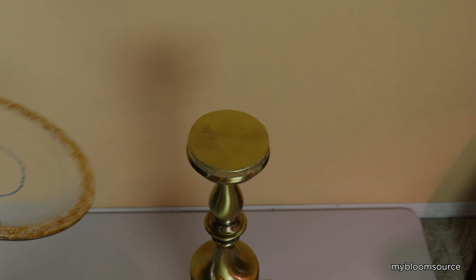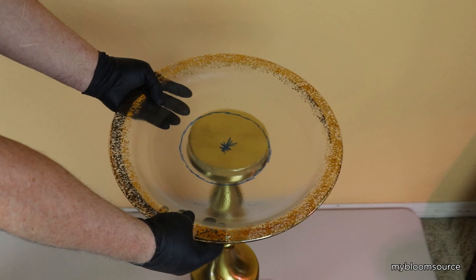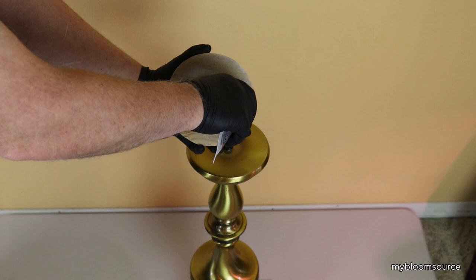For easier placement of the dish I used a dry erase marker to make guidelines. Now we are ready to apply the spacer. The spacer was then glued in place with a construction adhesive.